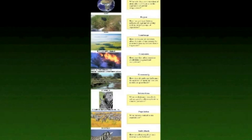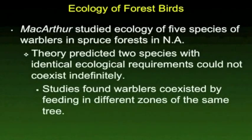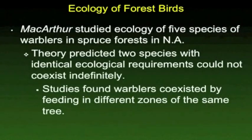An ecologist really needs to understand all of these interactions in order to conduct studies effectively. The first example of a study that the book talks about is this study of warblers that MacArthur did. A warbler is a small bird that we have in this area, but we don't see very much because they hide in the trees.